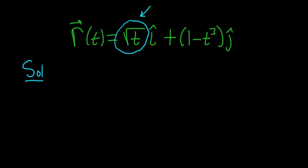First we take the derivative of the square root of t, then we take the derivative of 1 minus t cubed. Before we take the derivative of the square root of t, we're going to rewrite it.